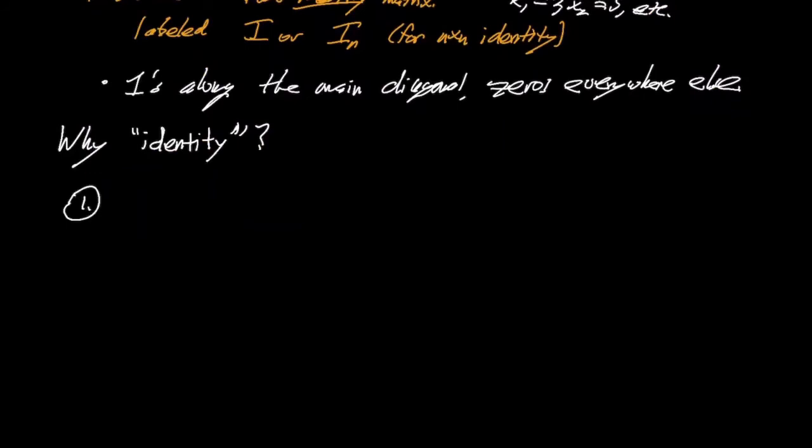And I can think of a couple of reasons. One is you might have heard, well, the word identity is used in math a lot, right? You might have heard it for like trig identities, you know. That's a little bit different. That's something, an identity sometimes is something that's always true no matter what you plug in for the variable.